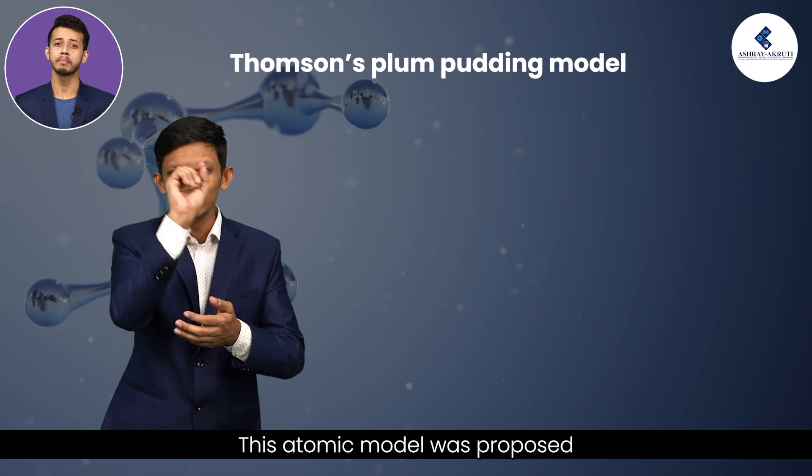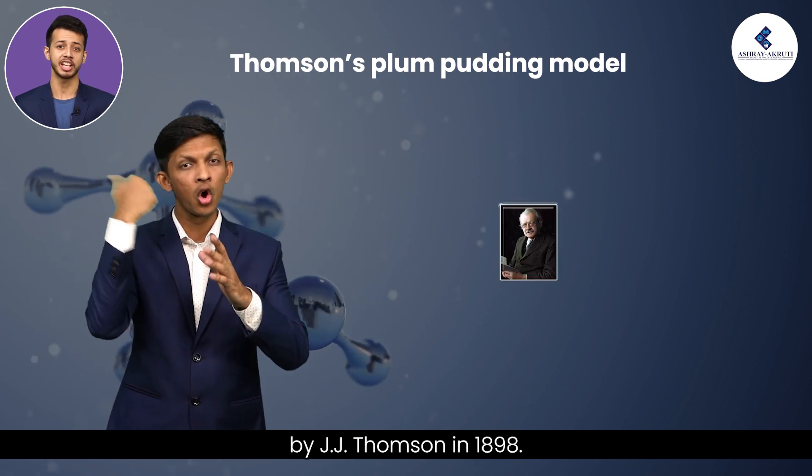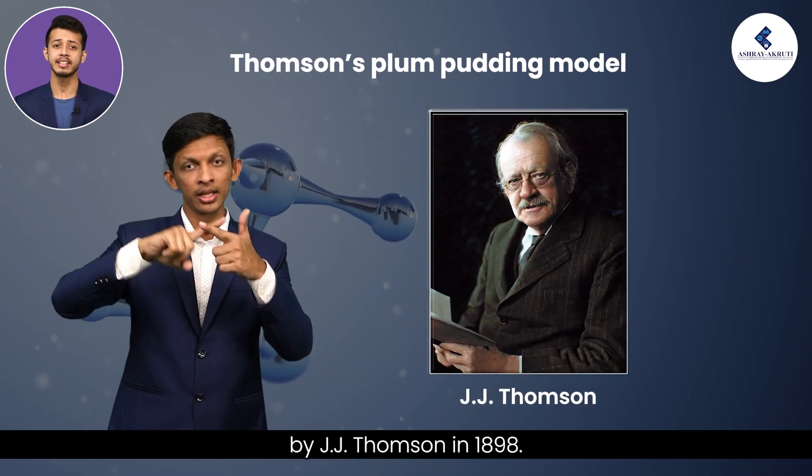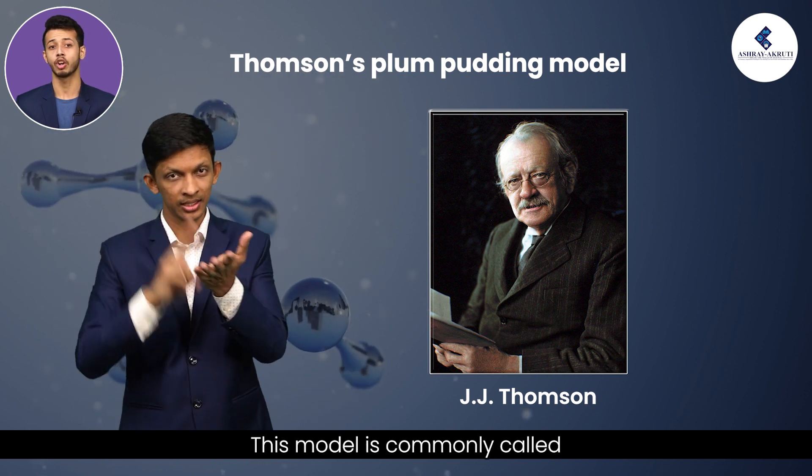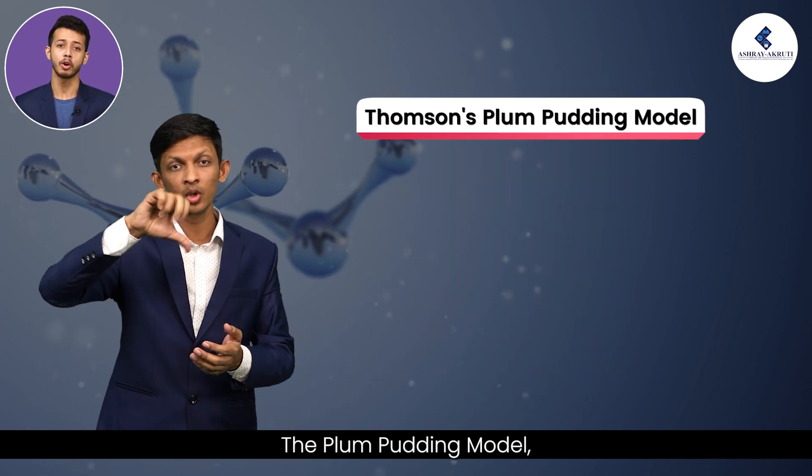This atomic model was proposed by J.J. Thomson in 1898. This model is commonly called the plum pudding model.